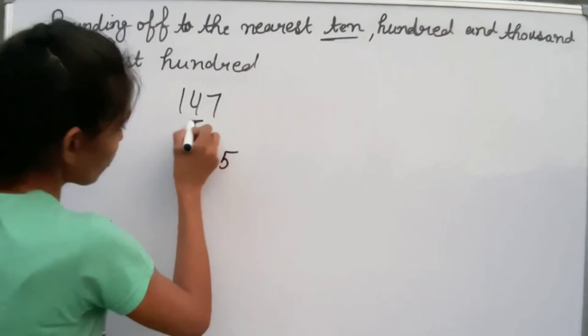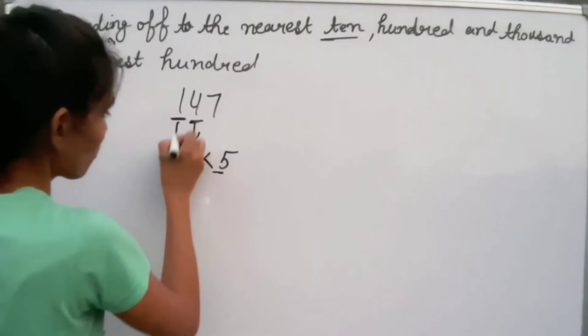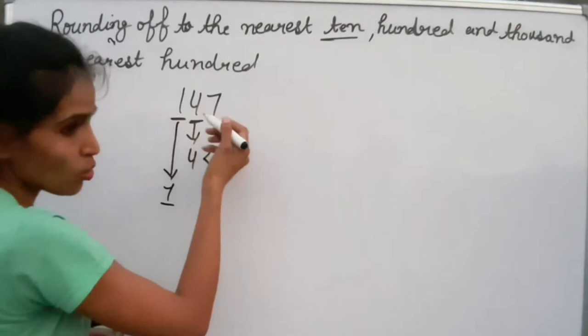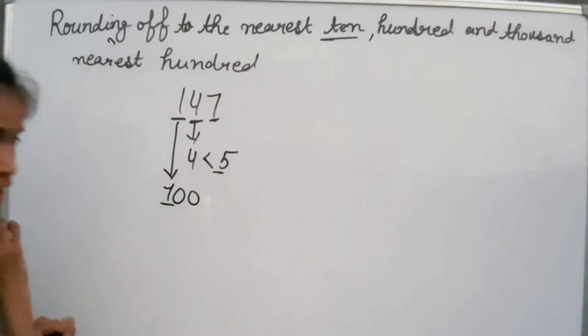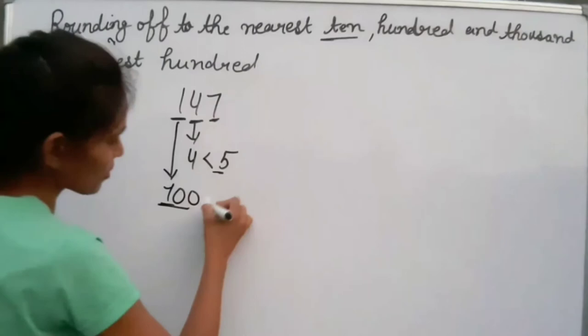Since 4 is less than 5, we do not add 1 to the hundreds place. Just like when rounding to the nearest 10 we changed 7 to 0, here we change both 4 and 7 to 0. The hundreds place stays the same, so the answer for rounding 147 to the nearest 100 is 100.